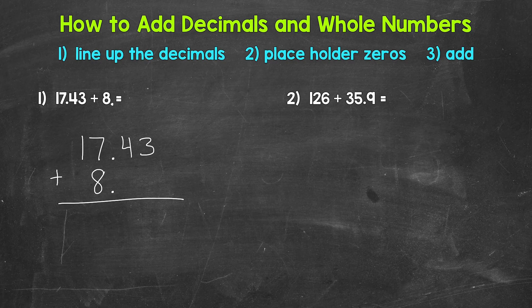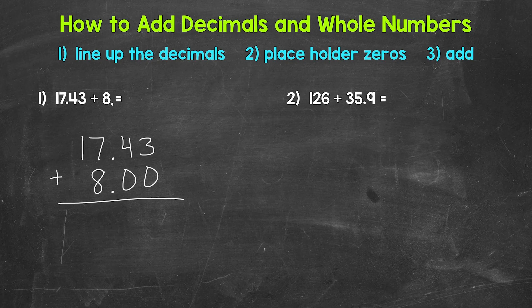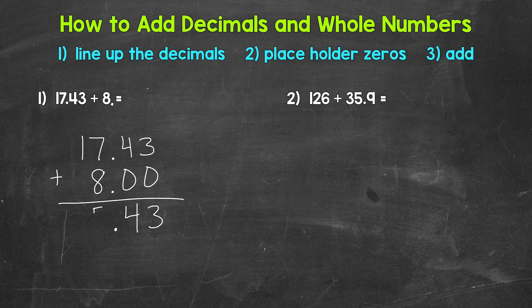It does look a little offset since 17 and 43 hundredths goes to the hundredths place and 8 only has a digit in the ones place. So we can use two placeholder zeros after the decimal so that 8 goes to the hundredths place as well. Those two zeros to the right of the decimal are not changing the value of 8 — it still has a value of 8. Now we can add. Starting with the hundredths place: 3 plus 0 gives us 3, 4 plus 0 gives us 4. Bring the decimal straight down. Then 7 plus 8 is 15, and 1 plus 1 gives us 2.